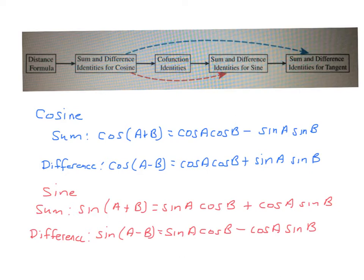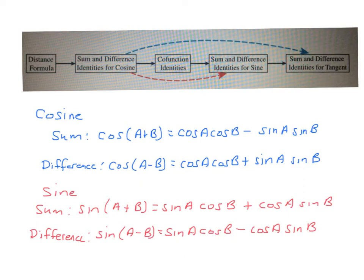The cosine sum formula: cosine of (A + B) equals cosine A times cosine B minus sine A sine B. The cosine difference formula: cosine of (A − B) equals cosine A cosine B plus sine A sine B. For sine, the sum formula is: sine of (A + B) equals sine A cosine B plus cosine A sine B. The difference formula is: sine of (A − B) equals sine A cosine B minus cosine A sine B. These are formulas we'll be using quite a bit in this section.